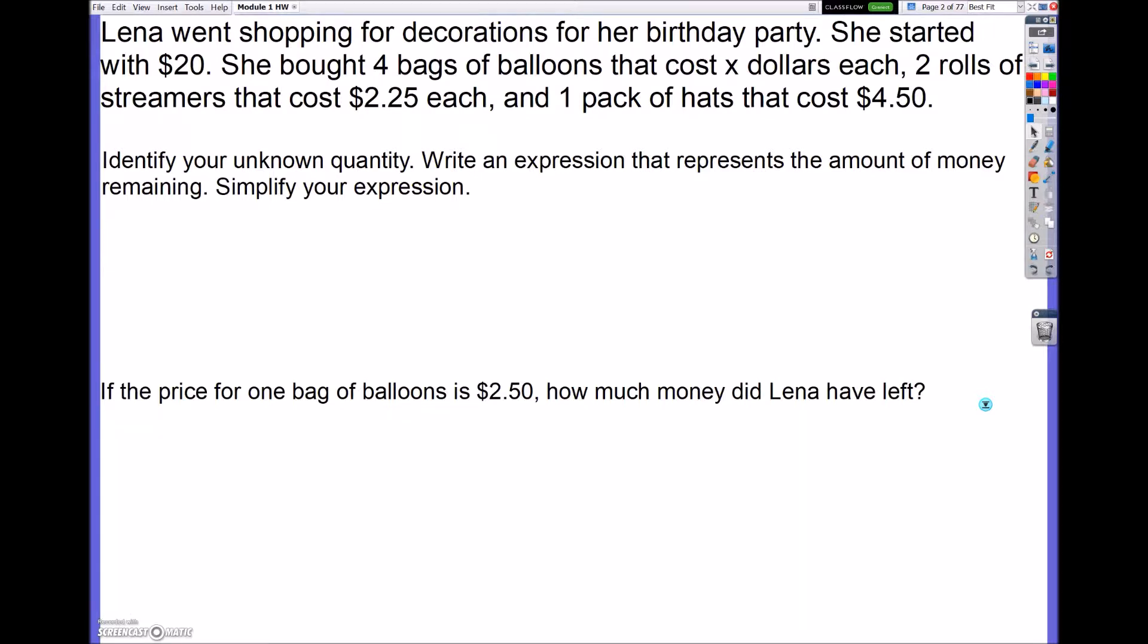The first thing that it always wants us to do is identify the unknown variable. And the unknown variable here is the cost of balloons, because it says four bags of balloons cost x dollars. So where it says identify the unknown variable, it's going to be balloons.